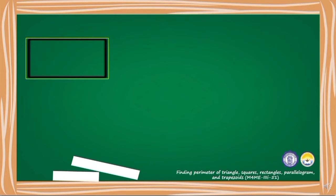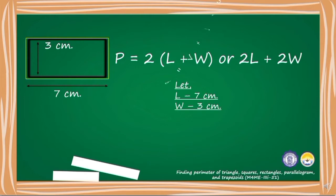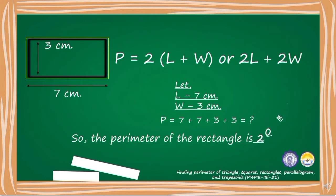This is a rectangle whose length measures 7 centimeters and the width measures 3 centimeters. The formula in finding the perimeter of a rectangle is 2 times L plus W or 2L plus 2W. Let L be the length of 7 centimeters and W be the width of 3 centimeters. So P is equal to 7 plus 7 plus 3 plus 3 equals 20 centimeters.